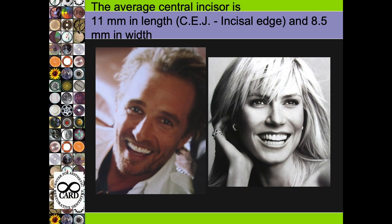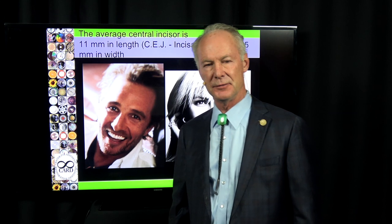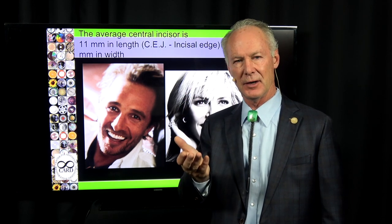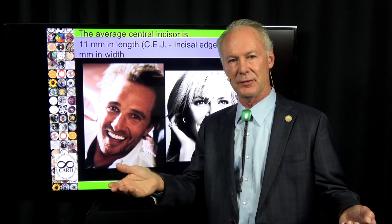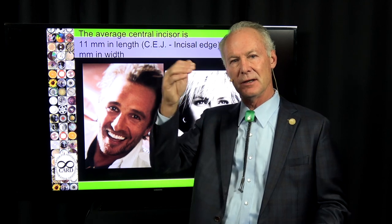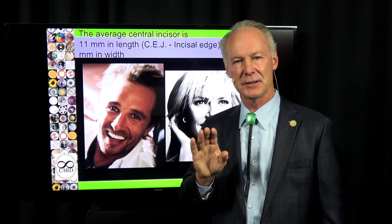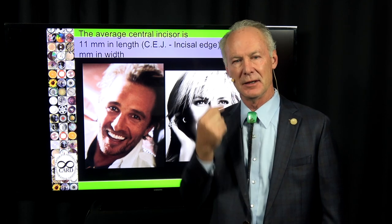The average central incisor is 11 millimeters from CEJ to incisal edge. There's something called passive gingival eruption, where the CEJ is under the gum. Take a periapical radiograph and measure from the CEJ to the incisal edge to see if part of the coronal portion of the tooth is under the gingival tissue, meaning it hasn't erupted completely. In those cases, do a periodontal crown lengthening — which is not just a gingivectomy, but a gingivectomy and an ostectomy. You generally have to remove bone in addition to the gingivectomy.